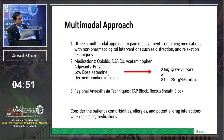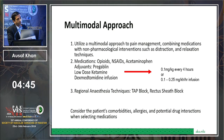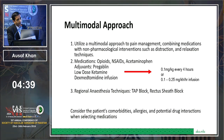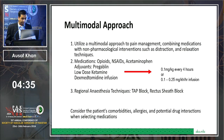Another excellent option is dexmedetomidine infusion — an alpha-2 agonist. Load at 1 mcg/kg IV over 10 minutes, then maintain infusion at 0.2 to 1 mcg/kg/hour. This provides both analgesia and sedation. However, be careful using dexmedetomidine in patients with ischemic heart disease. Regional anesthesia techniques — transverse abdominis plane block, rectus sheath block, and quadratus lumborum block — are also options.